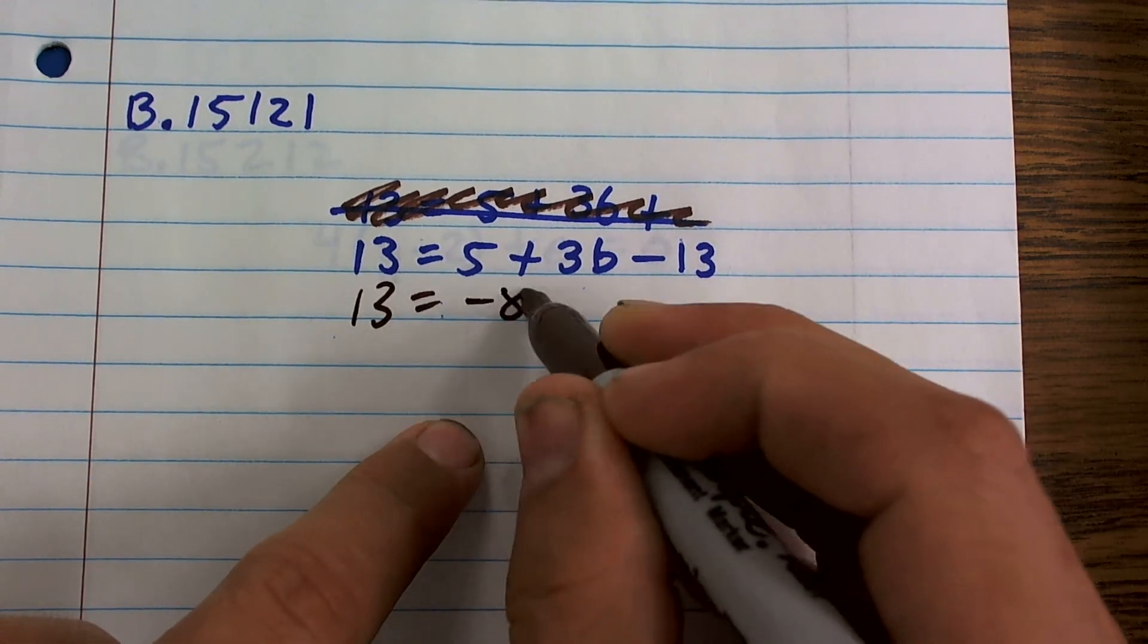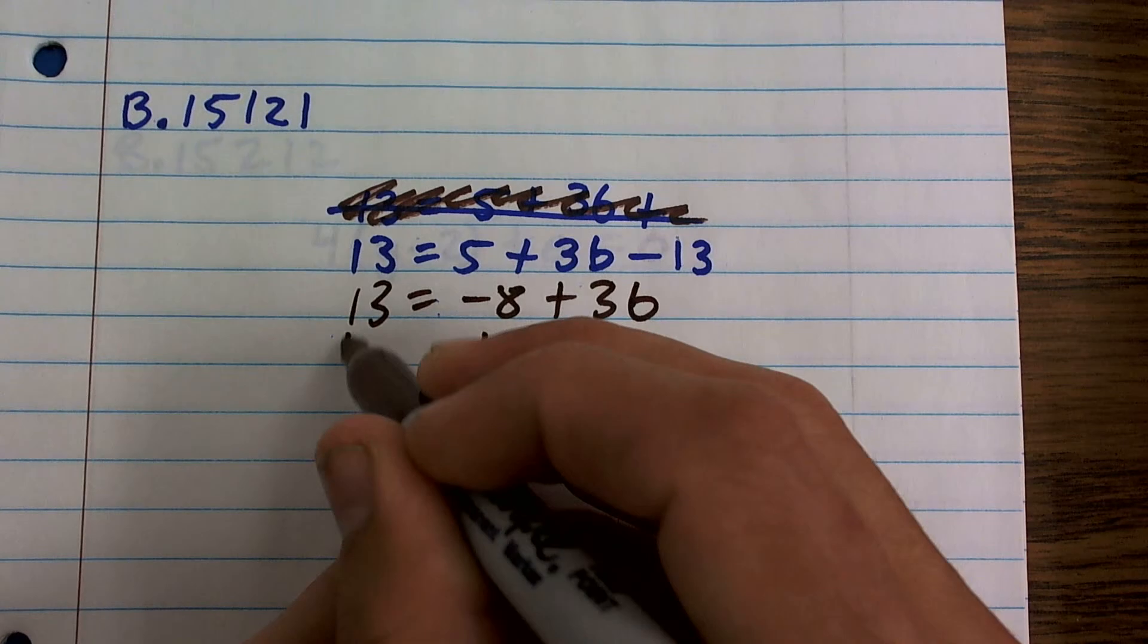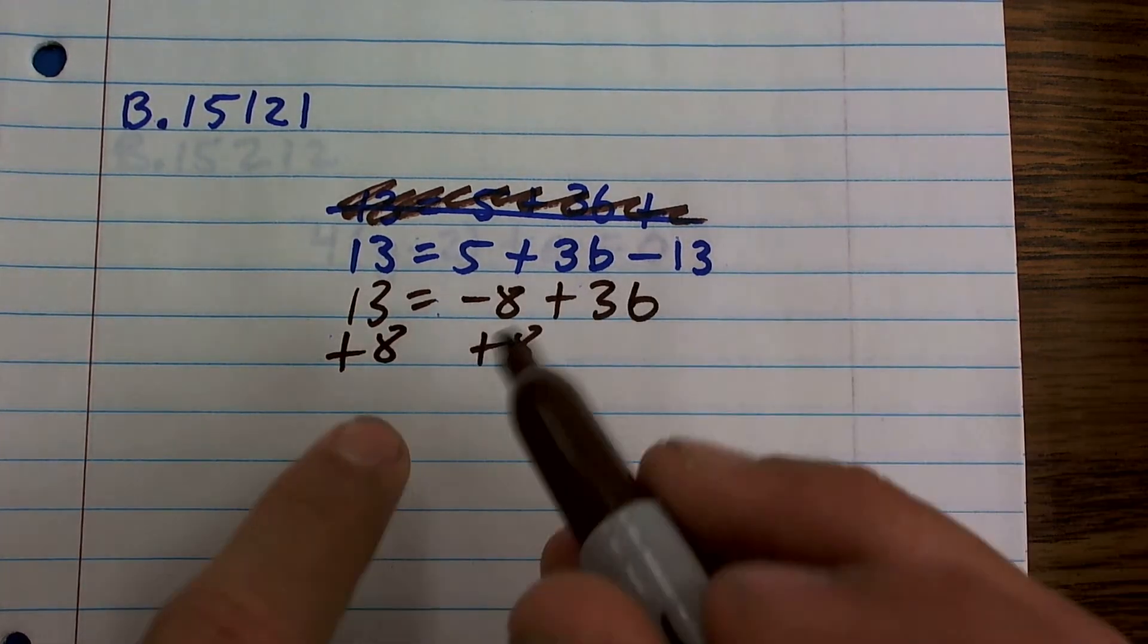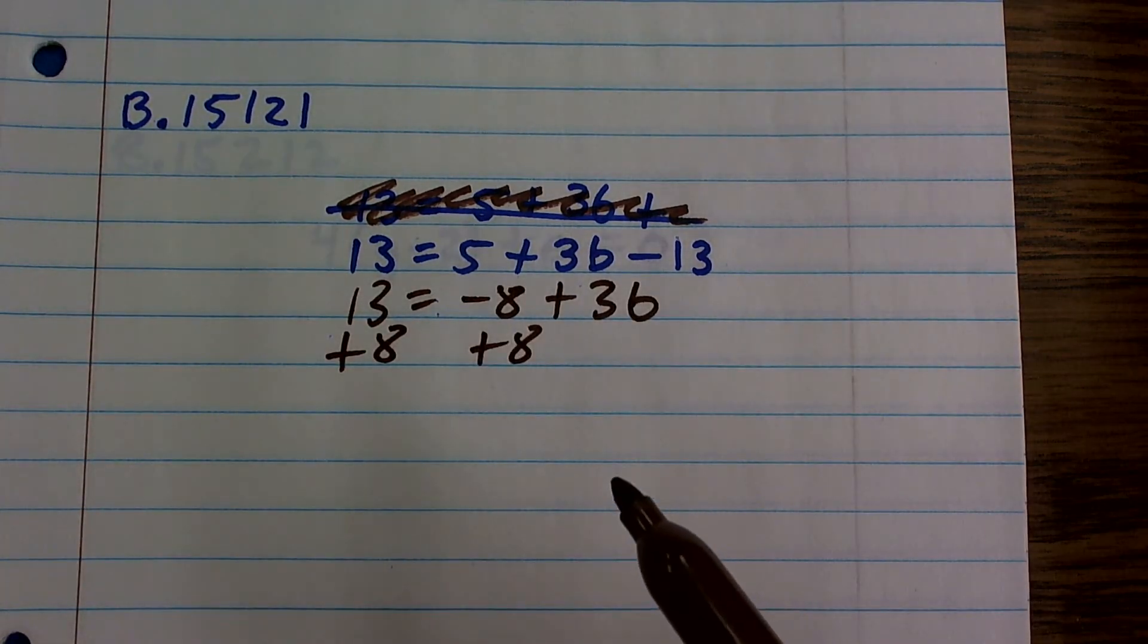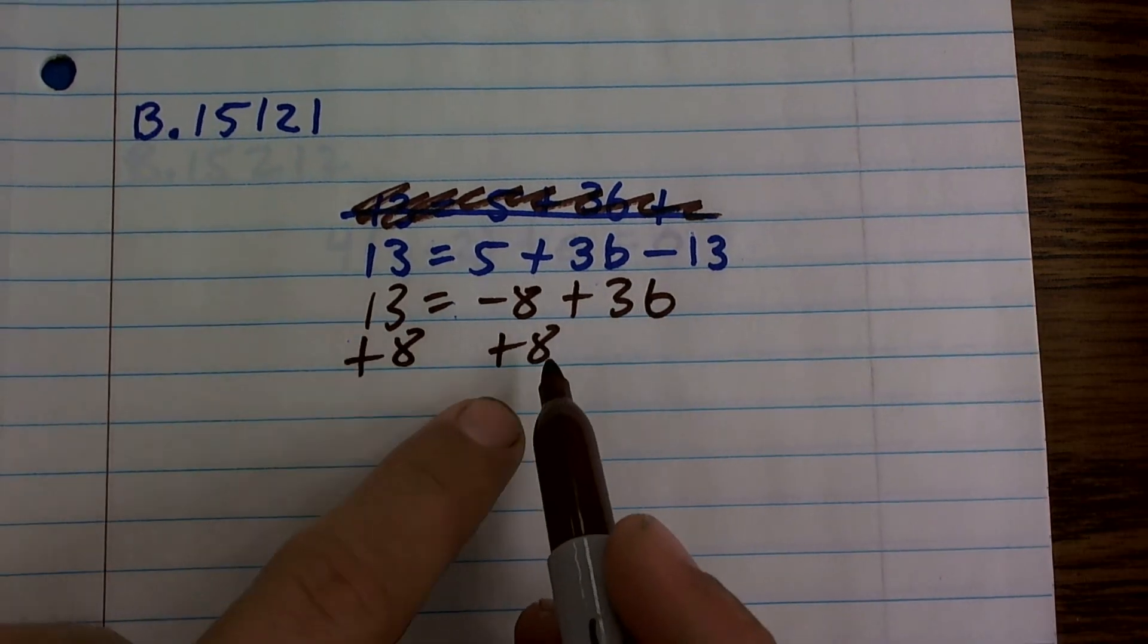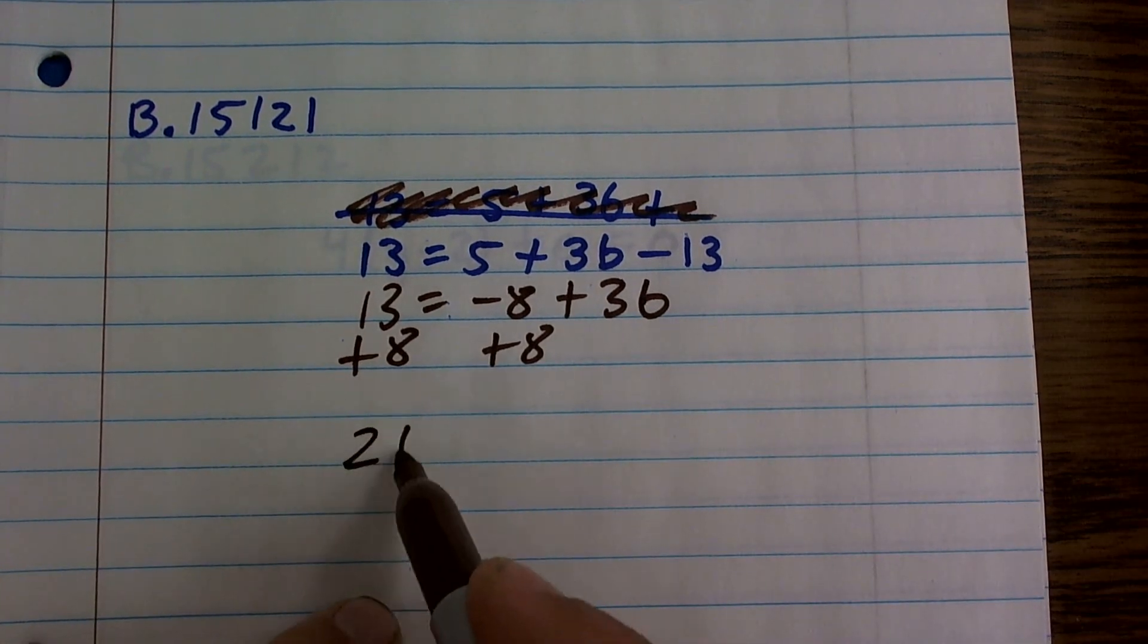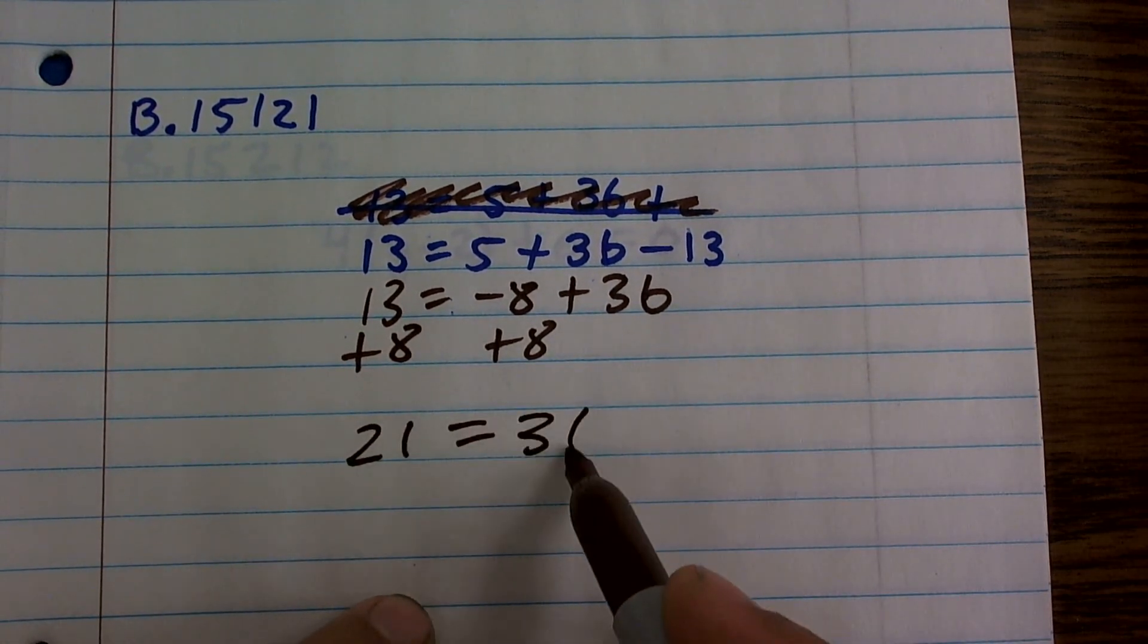So again, 13 equals negative 8 plus 3b. Add an 8 to both sides using addition property of equality. And remember, you can only add 8 once on the right side. You can't add it over to there because then you use equivalent equations. So I have 21 equals 3b.